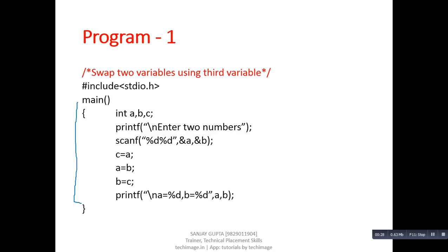In this program, the code is written inside the main function. We are using three variables: A, B, and C. The first value will be stored inside A and the second value will be stored inside B, which the user will be entering. These three statements show the swapping process: first, C equals A; then A equals B; then B equals C.